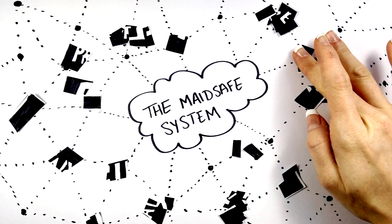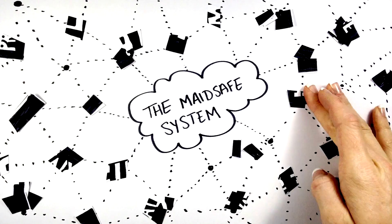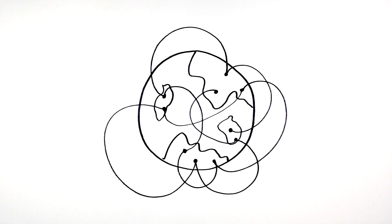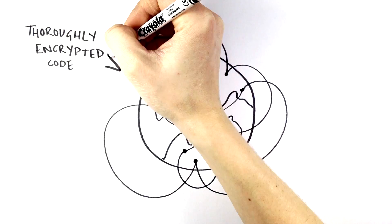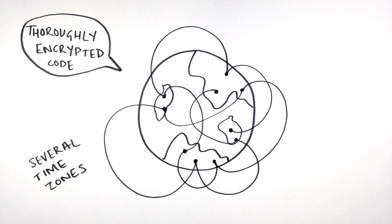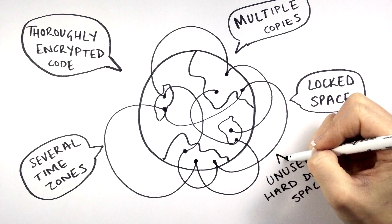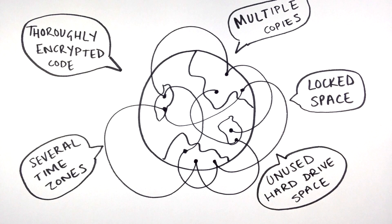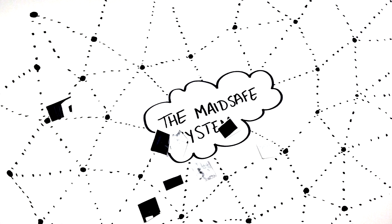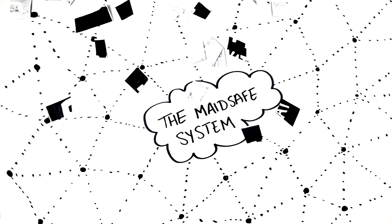This data is then distributed intelligently to the network. This network spans the planet. All of this thoroughly encrypted code now resides in several time zones, securely stored in multiple copies in locked space on other networked computers, using a portion of whatever unused hard drive space is available, as if the data was transformed into a grain of sand and distributed wherever the wind takes it.